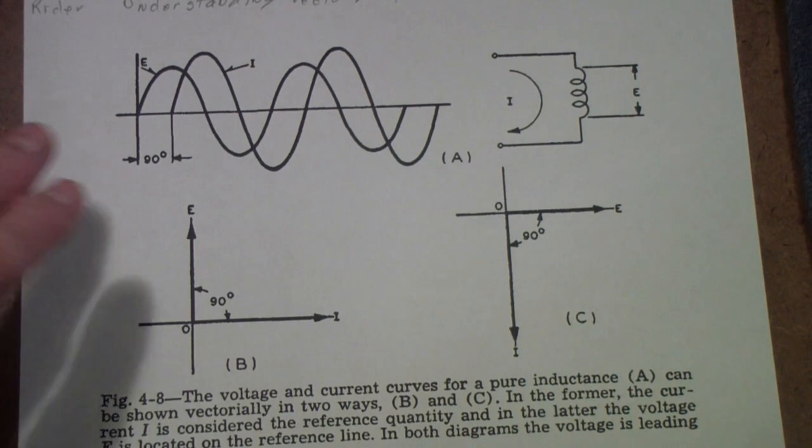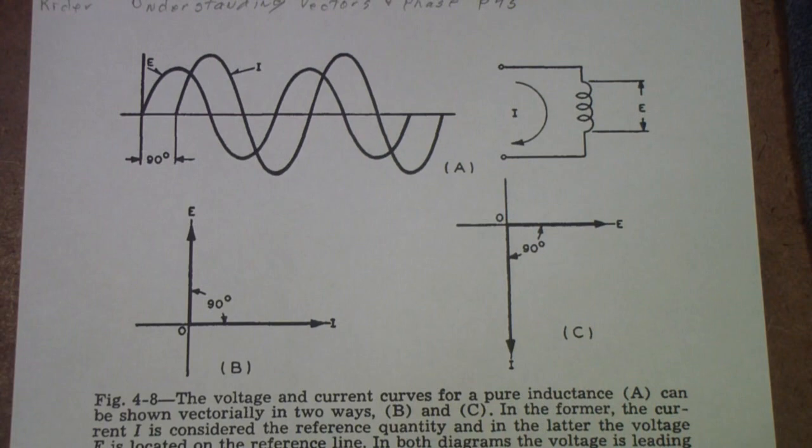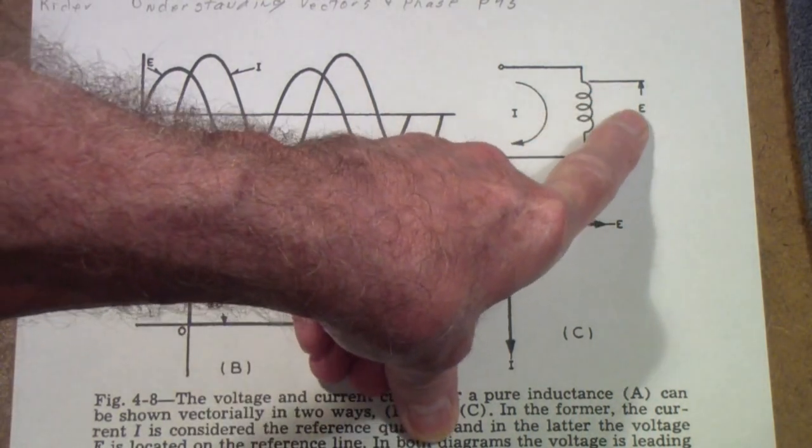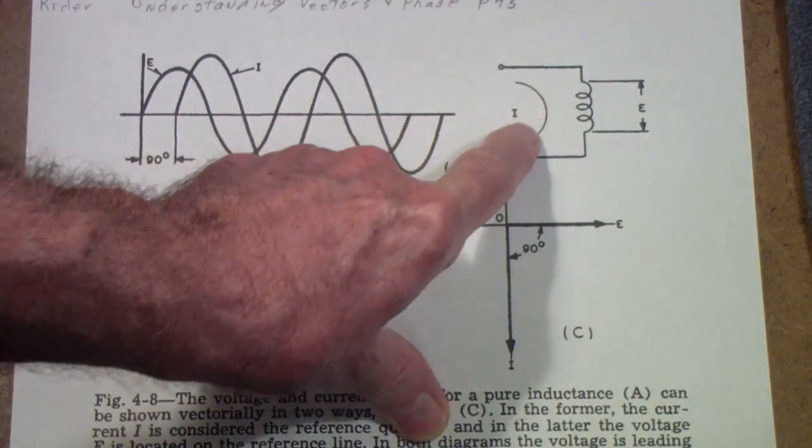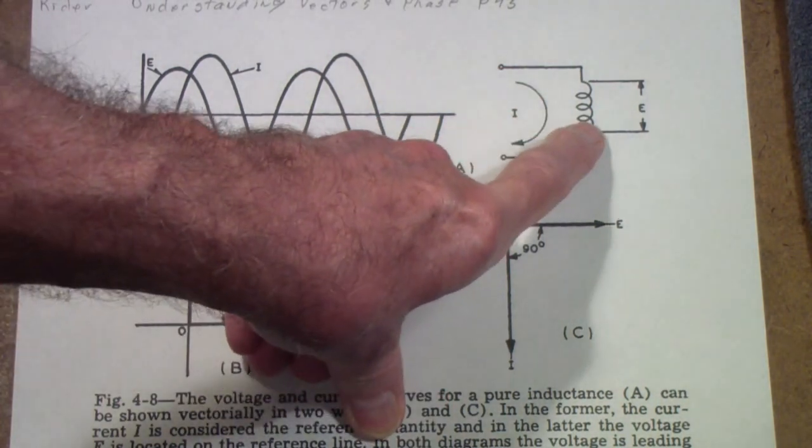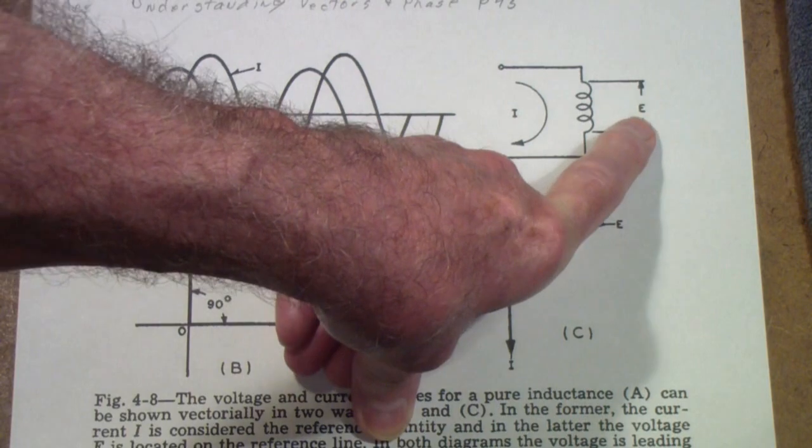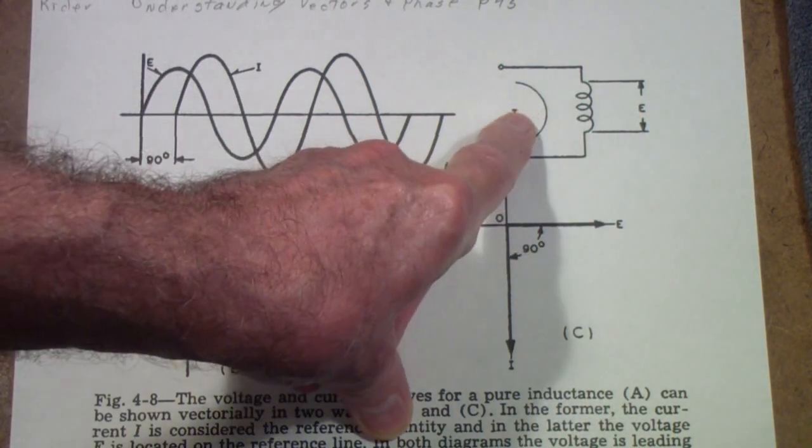is a mnemonic that a lot of students of electronics have learned over the years. E stands for electromotive force, or voltage. L stands for inductance, and I stands for the current. So, the voltage across the inductor is called E. The current through the inductor is called I, and the inductor is called L. Therefore, E-L-I is Eli.